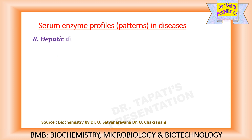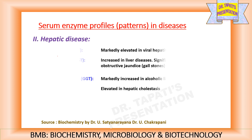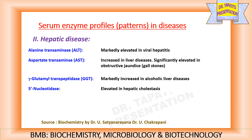Now, serum enzyme profiles in hepatic disease. Alanine transaminase activity is increased in viral hepatitis. Aspartate transaminase or AST level is increased in liver diseases, and significantly elevated in obstructive jaundice due to gallstones. Gamma-glutamyl transpeptidase or GGT level is increased in alcoholic liver diseases. Whereas 5'-nucleotidase activity is increased in hepatic cholestasis.